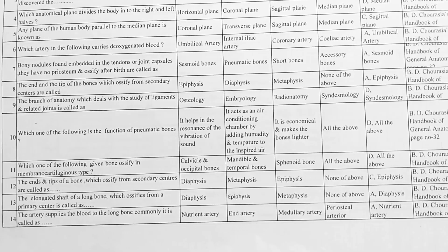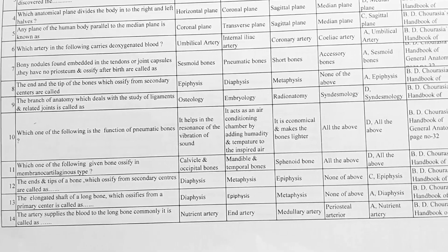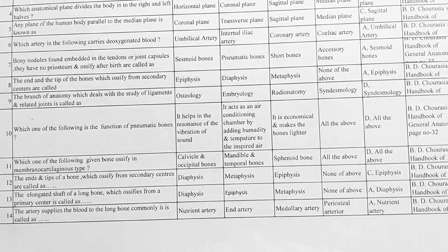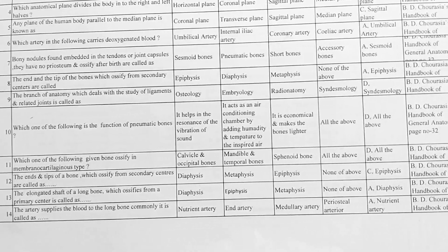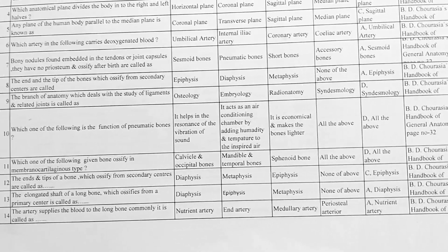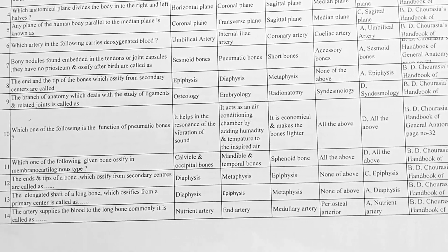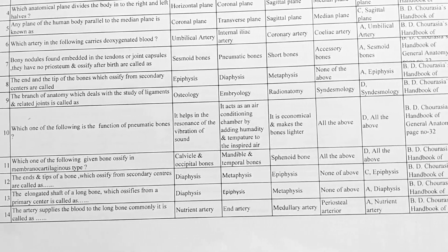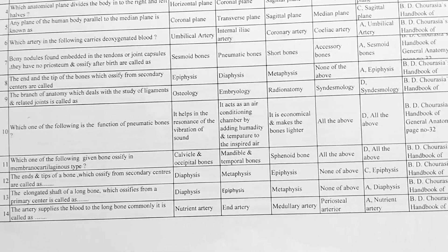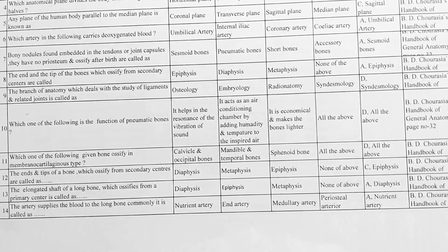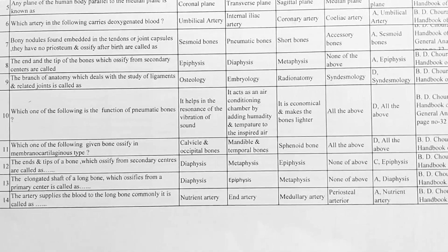Next, the end and tip of bone which ossify from the secondary center are called — options: A. diaphysis, B. metaphysis, C. epiphysis, D. none of the above. Correct answer is C, epiphysis.